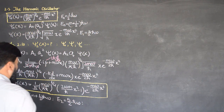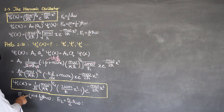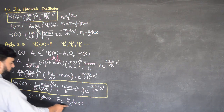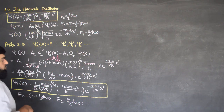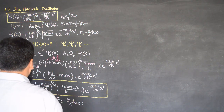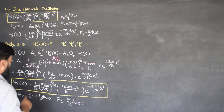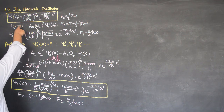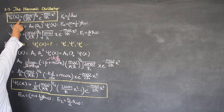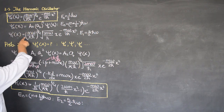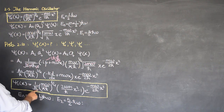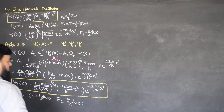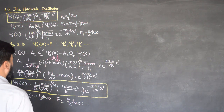Similarly, the third excited state has energy 7/2 ℏω, the fourth has 9/2 ℏω, and so on. So we have obtained our wave functions: ψ₀ — the ground state, or non-excited wave function — then the first excited state, the second excited state of the harmonic oscillator, and so on.